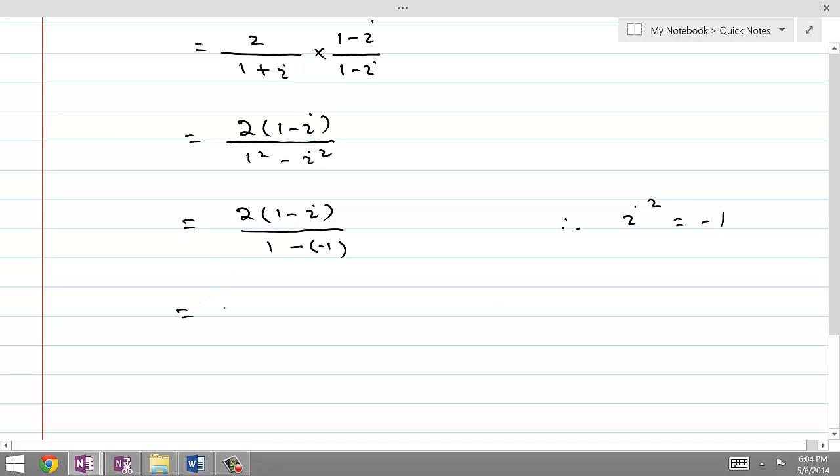And this gives us 2 times 1 minus iota over 2. The 2 will be cancelled with 2, so R is equal to 1 minus iota.